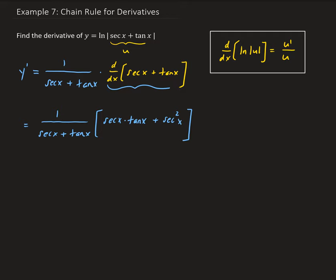From here we can go ahead and simplify this. We can factor out a secant x, so we have secant x times tangent x plus secant x, and then this is divided by secant x plus tangent x.